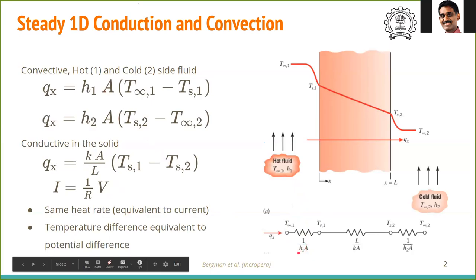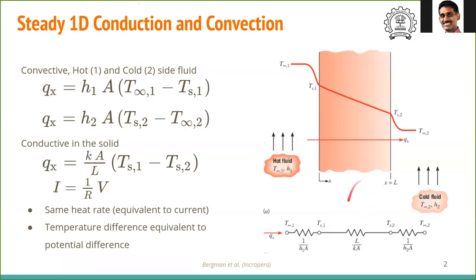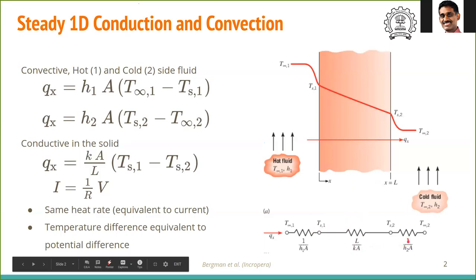The thermal resistance for convection on the first side is 1/(h₁·A). Just as potential difference is continuous, temperature is also continuous across interfaces. The resistance from conduction is L/(k·A), and from convection on the other side is 1/(h₂·A). Because temperature is continuous, we can write these as resistances in series.